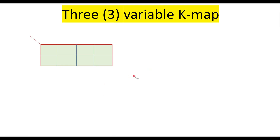Now consider a 3-variable KMAP. Let A, B, and C be the variables. With 3 variables, that is 2 to the power 3, we can get 8 cells. So this is a way of representation of a 3-variable KMAP.